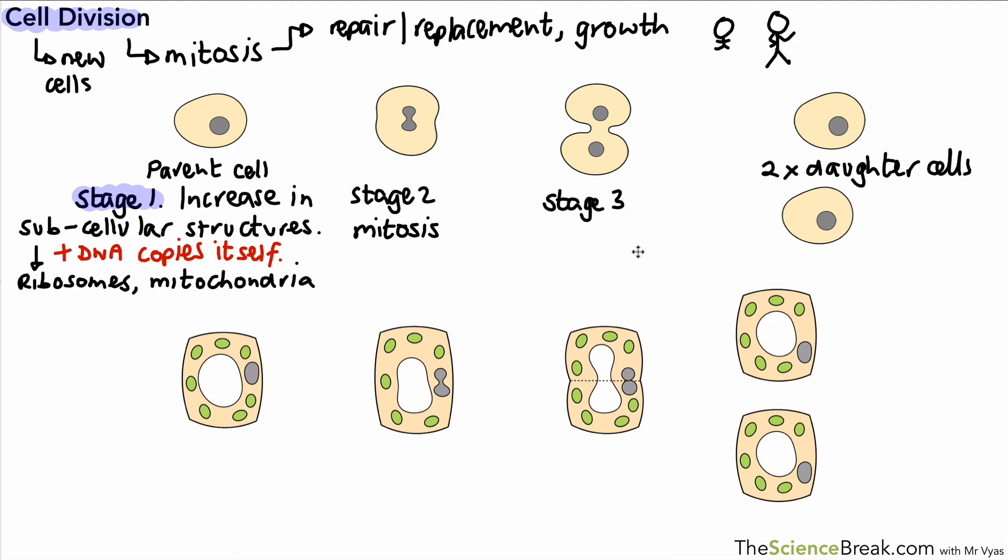Stage three is where the cytoplasm splits, the cell membrane splits into two, the nuclei have finished splitting into two, and we end up with two new daughter cells, each with a full copy of the DNA compared to the parent cell.